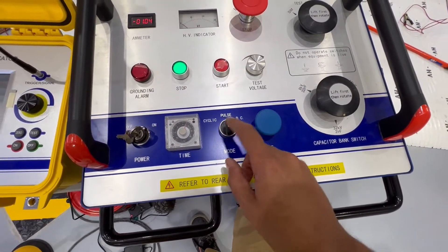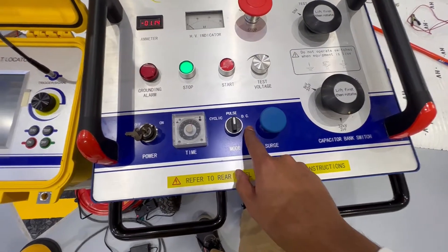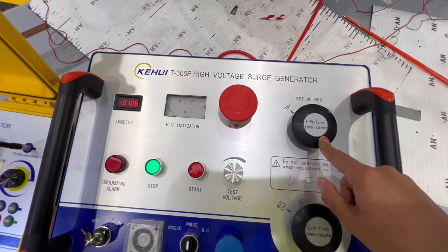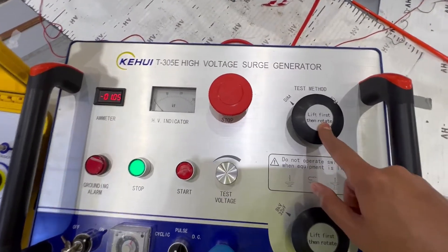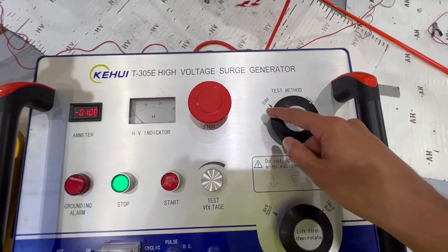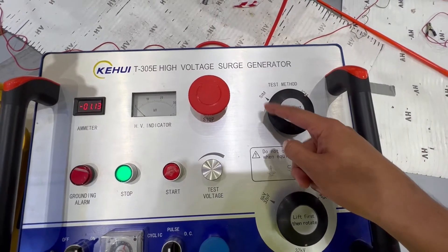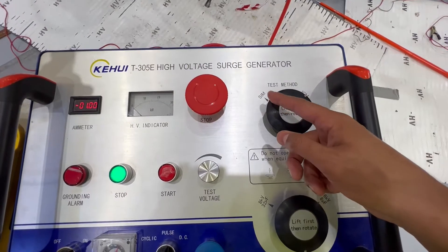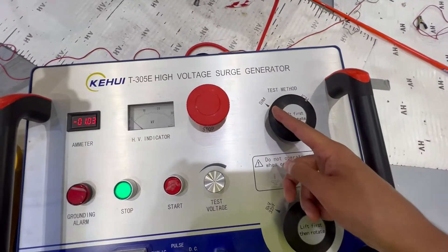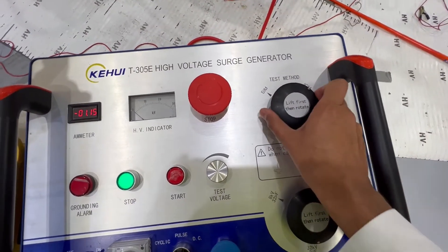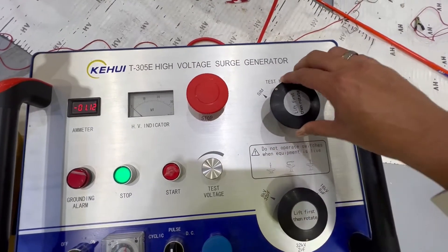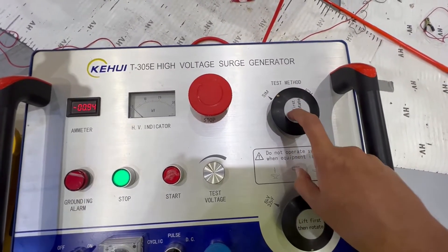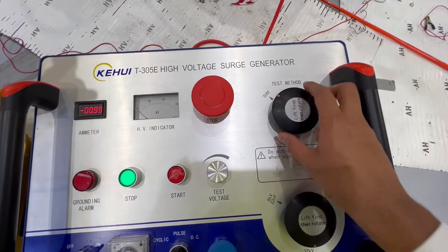In this particular mode, you have a test method whether you can use a SIM method, secondary impulse method, or we call it as a multiple impulse method. In other terms, we can also say it as an arc reflection method. You have a knob here where you can change it to whatever test method you want to do, whether secondary impulse method or an ICM method, current impulse method.